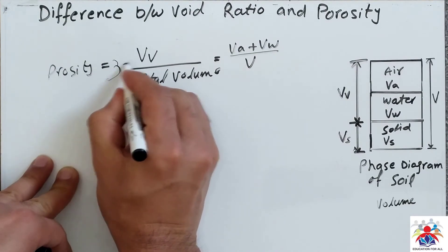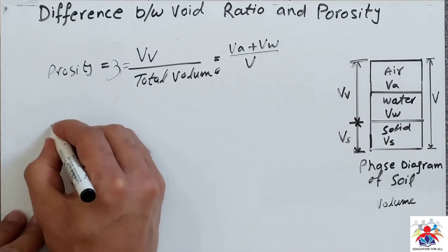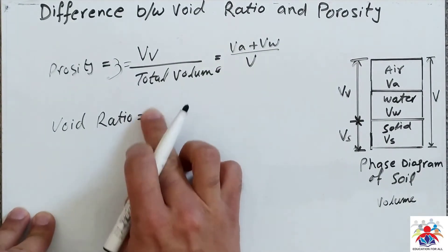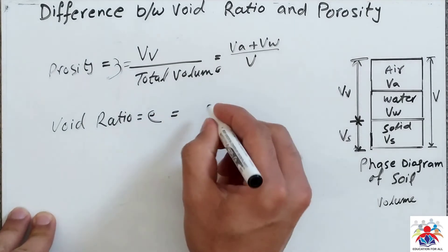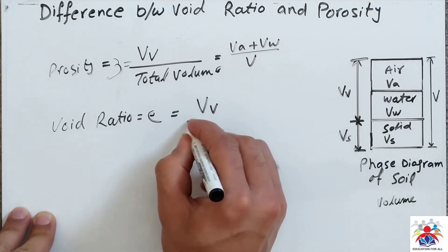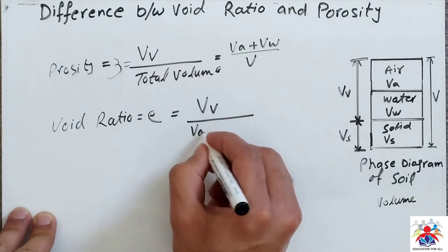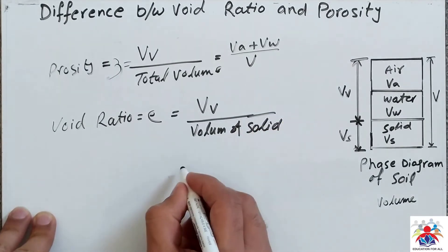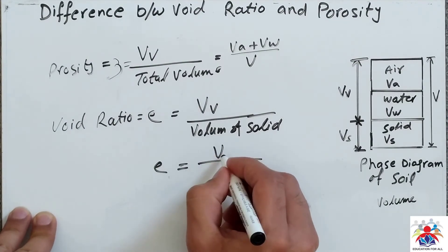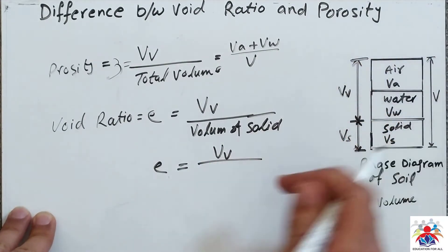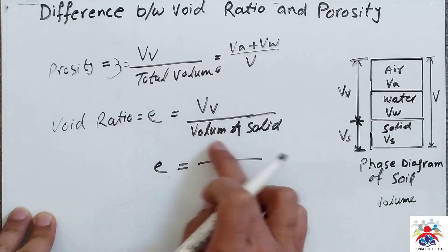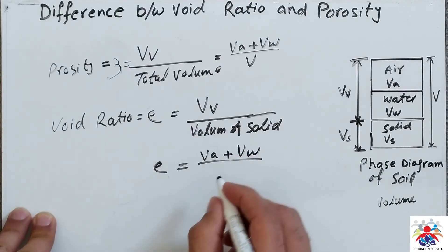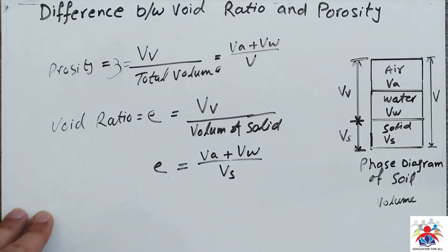Now we have void ratio. Void ratio is basically expressed with this e or something. So you can say e equal to volume of voids divided by volume of solid. So you can also write this e is equal to volume of voids, which is combination of volume of air plus volume of water.